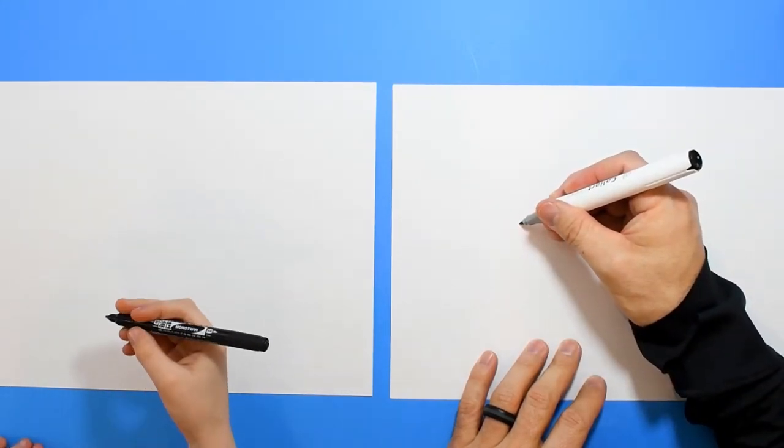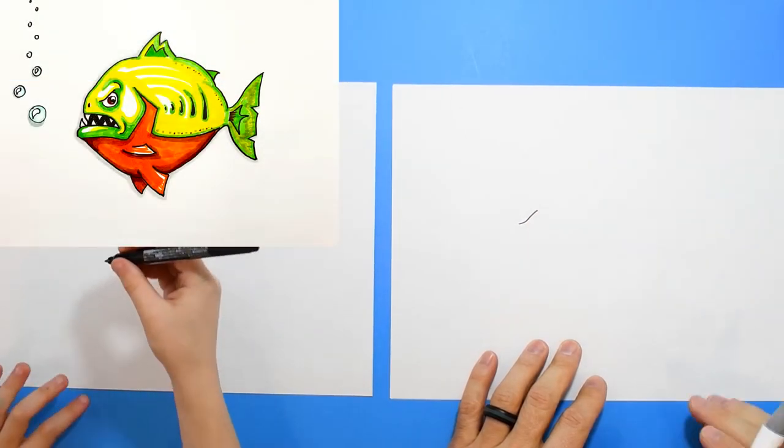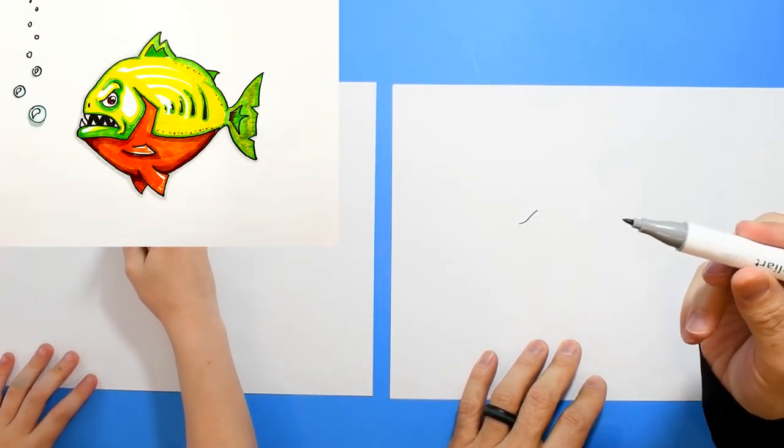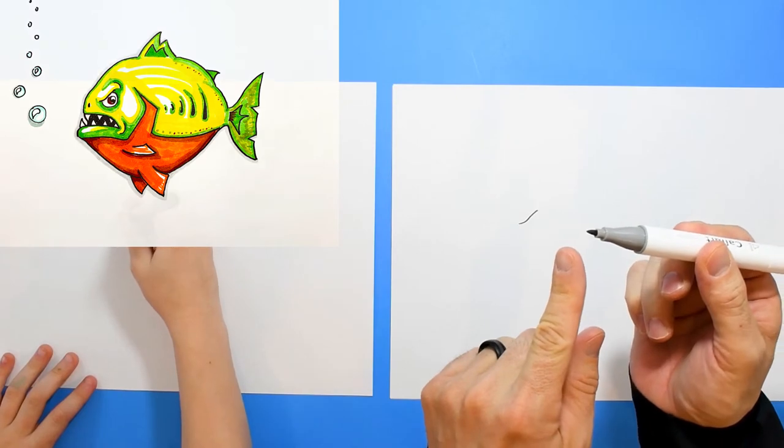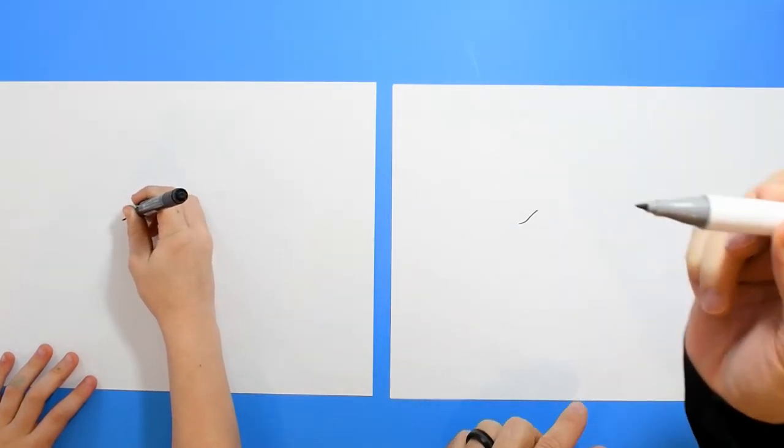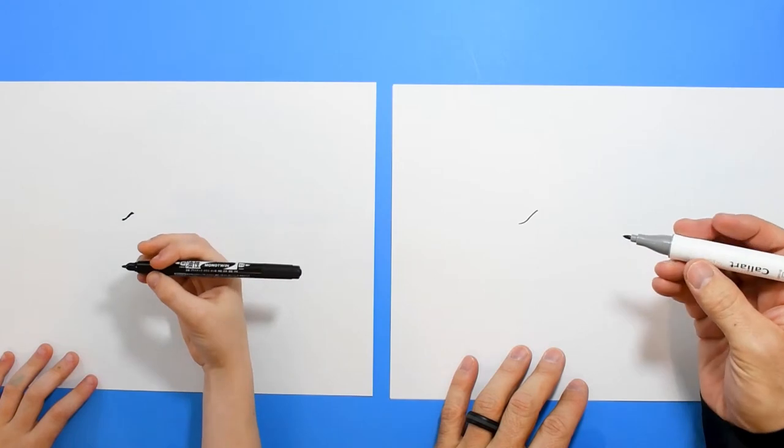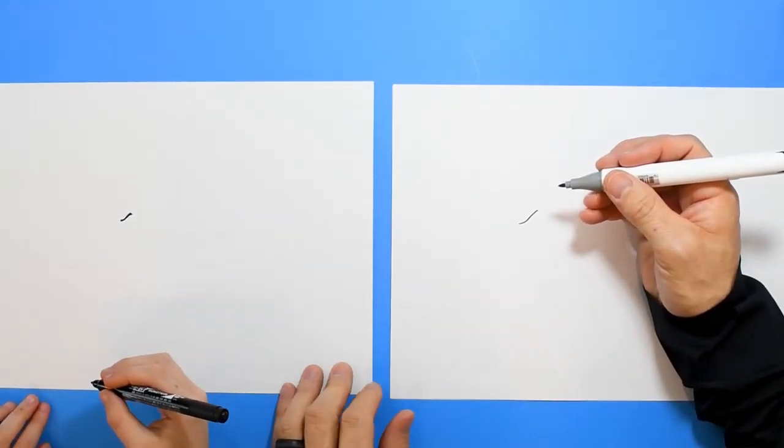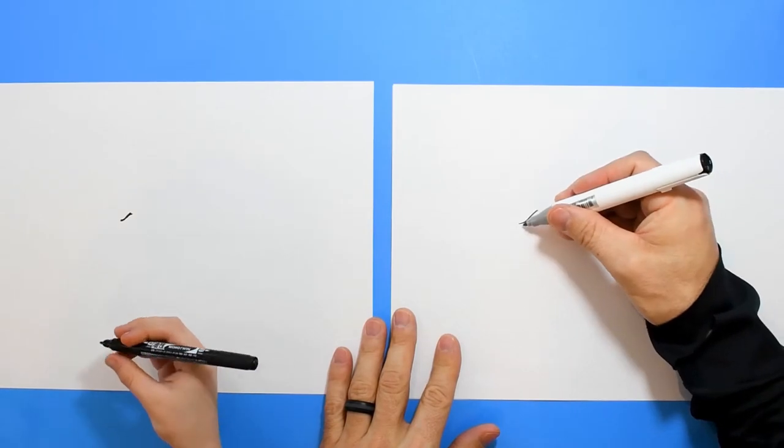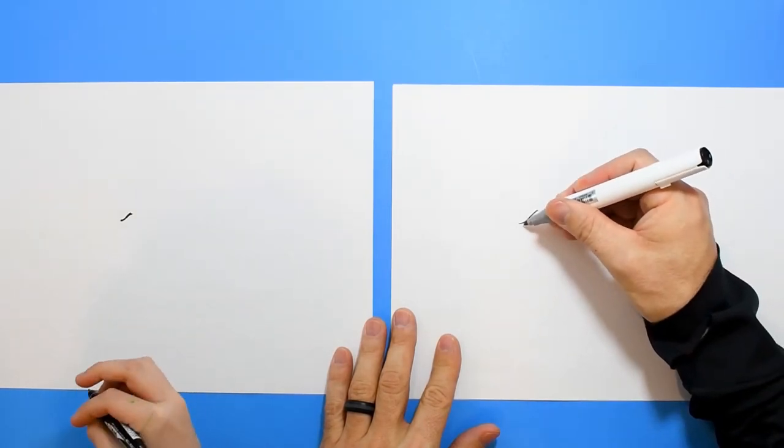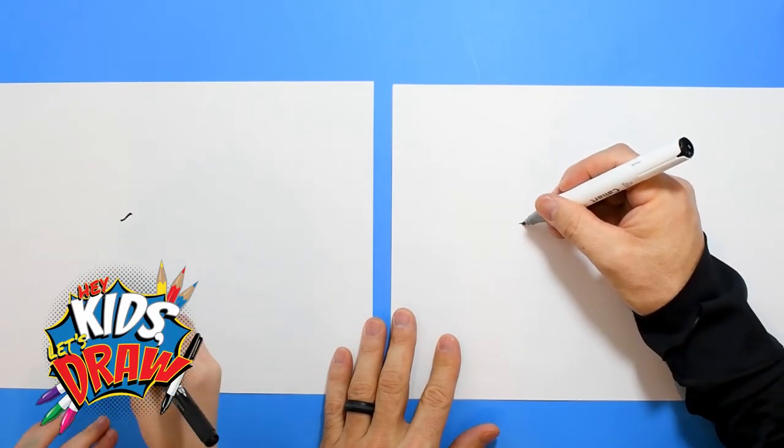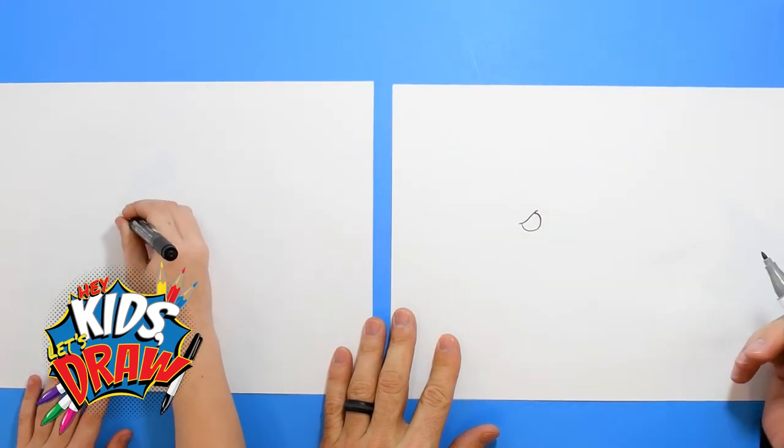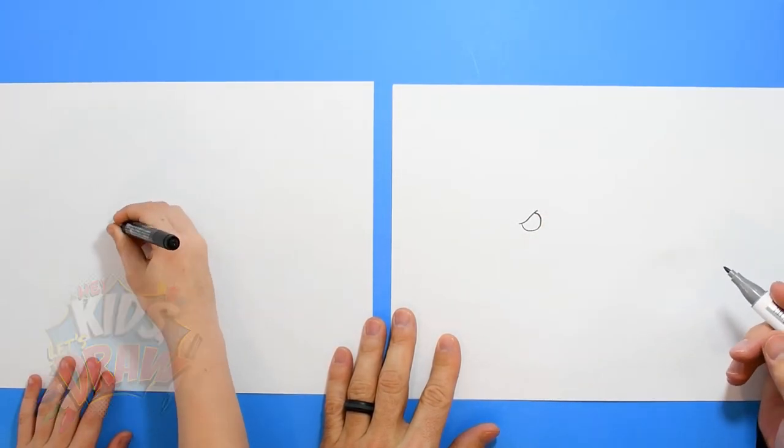I'm not using a sharpie today. I'm going to use kind of a fine tip marker so you can see it there. So is Kimble. All right. Now, let's keep our paper right in the center, and we're going to make a kind of a half circle.